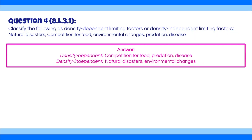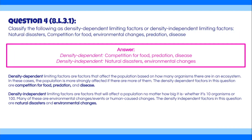Density-dependent limiting factors affect the population based on how many organisms there are — the population is more strongly affected when there are more of them. Competition for food is density-dependent because the more organisms there are, the fewer resources each one gets. Predation is also dependent on how many predators and prey exist. Disease is density-dependent because it spreads more quickly when organisms are closer together, which happens when population density is higher.